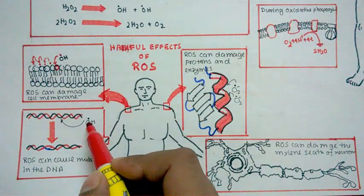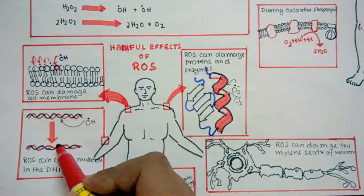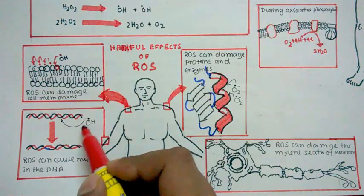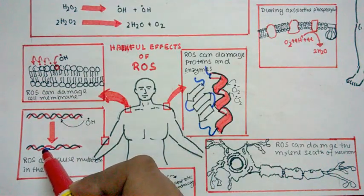And apart from that, this DNA damage could lead to apoptosis also. So ROS-mediated DNA damage could ultimately lead to apoptosis.